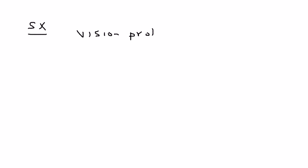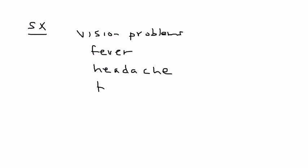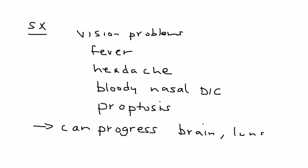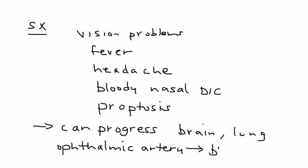In terms of symptomatology, a person can have vision problems, severe fever, and headache. Bloody nasal discharge is also common, and proptosis — where the eye bulges outward — is frequently seen. The infection can progress to the brain causing CNS dysfunction, spread to the lungs, and if the ophthalmic artery is involved, it can lead to blindness.